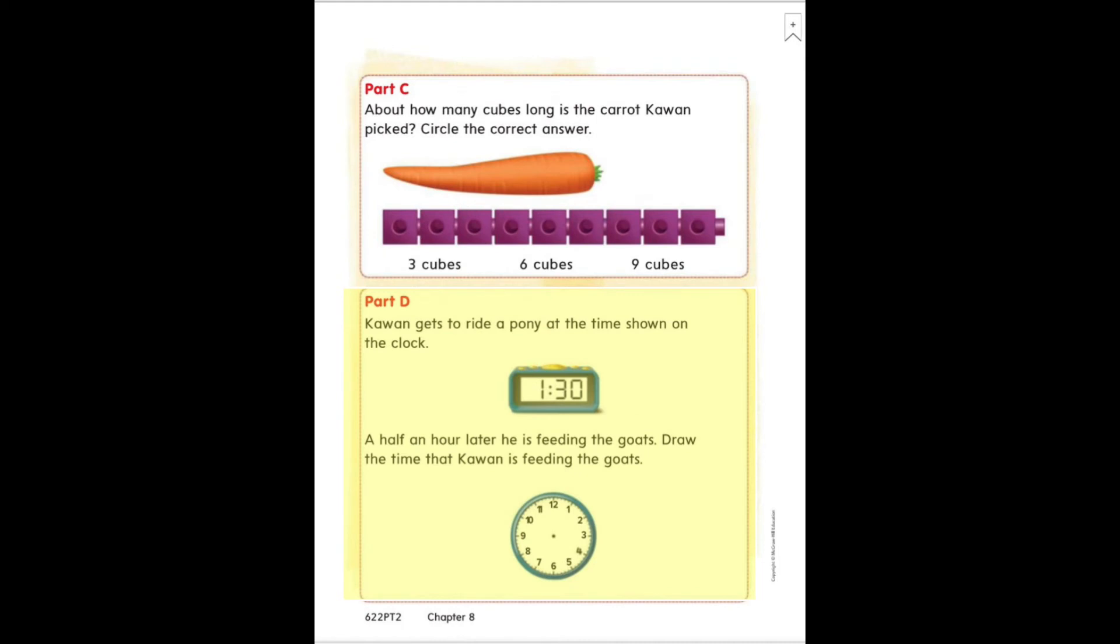Part D is bringing us back to clocks. It says Kawan gets to ride a pony at the time shown on the clock. A half hour later, he is feeding goats. Draw the time that Kawan is feeding goats. So first graders, you have to read the time on the digital clock, and then you will write the analog time for the time he feeds the goats, a half hour later. So think, what's a half hour later than 1:30? Draw that time on the analog clock.